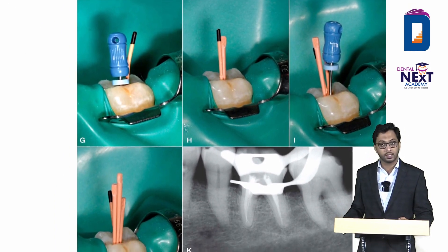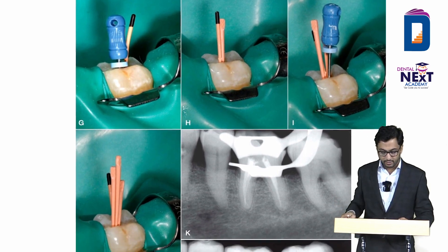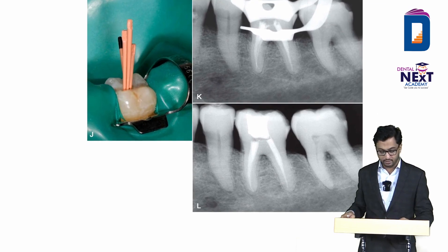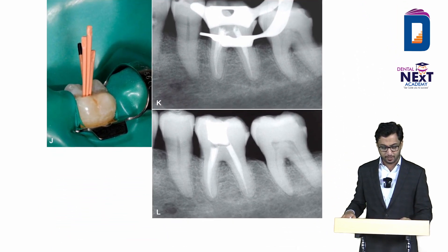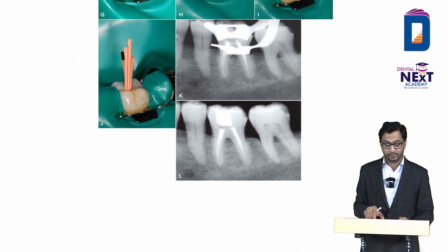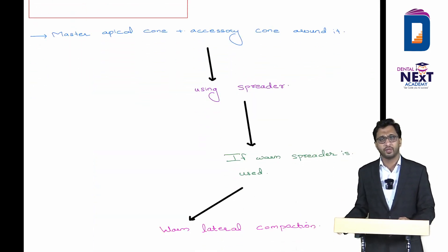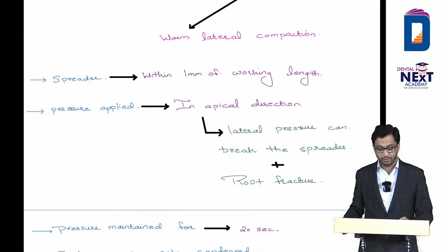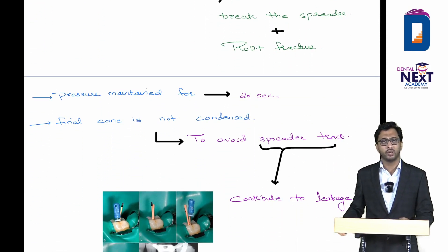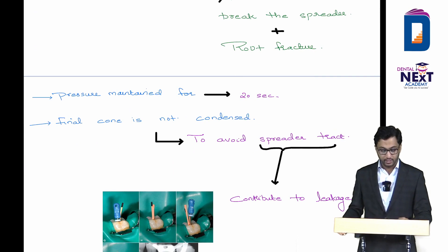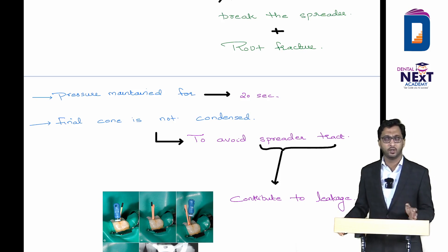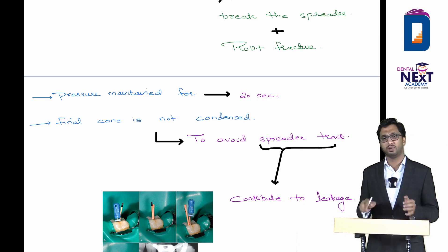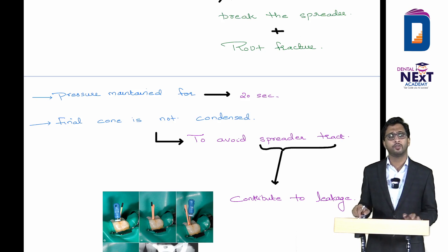In the image, the blue spreader is shown with the master cone placed, then accessory cones are added sequentially. In exam questions, note: in lateral condensation, pressure is applied in the apical direction. The accessory cones are condensed laterally. The final cone is not condensed — to avoid spreader tract formation and micro-leakage. This is a commonly tested exam point.